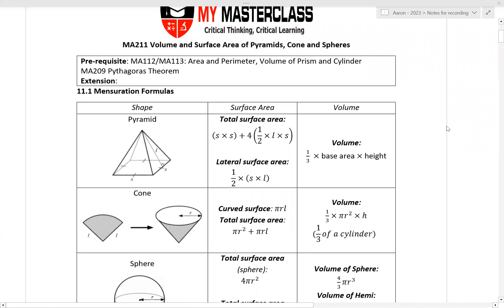Today's lesson is chapter MA211: volume and surface area of pyramids, cones, and spheres. You'll be learning the formulas for both surface area and volume for the three different shapes.